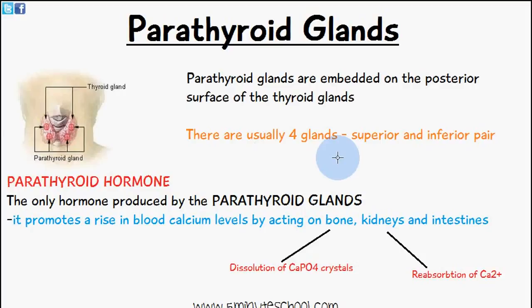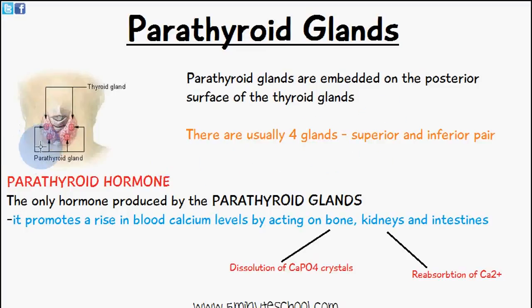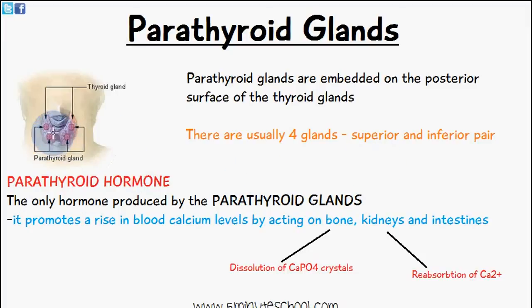Welcome to 5-Minute School. In today's video we're going to be talking about the parathyroid glands, and they are embedded on the posterior surface of the thyroid glands. You can see here we have the thyroid glands, and embedded on top we have approximately four parathyroid glands. There are usually four glands, and we have a superior pair and an inferior pair.